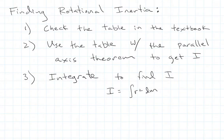Just to recap: finding the rotational inertia of an object. Number one, look in the table — see if it's there, maybe you get lucky and you're done. If not, go to step two: see if you can use the table in conjunction with the parallel axis theorem, and that's going to work 90% of the time. If that doesn't work, go to step three: integrate over the object and find I the hard way by direct integration.